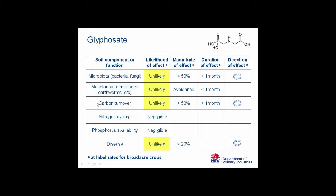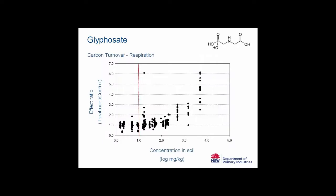I'd like to focus on carbon turnover and disease. There is quite a lot of data on the effects of glyphosate on carbon turnover, and also a lot of attention on whether glyphosate impacts on the occurrence of disease when crops are being sprayed. This data comes from about 40 different papers, and what you are looking at is the effect of a glyphosate application to soil on respiration — CO₂ emissions from soil. On the x-axis is the concentration in soil on a log scale.